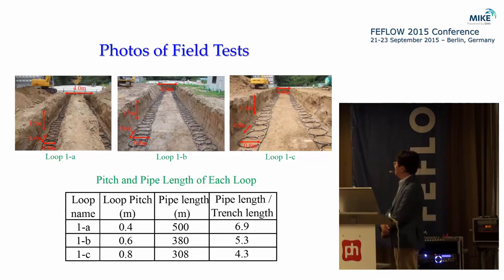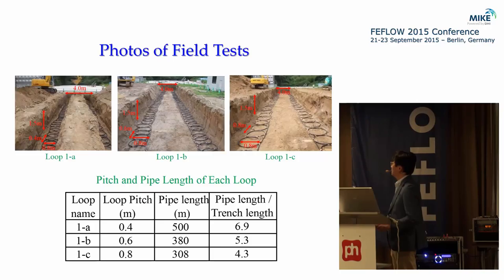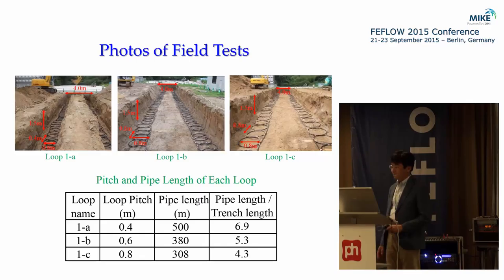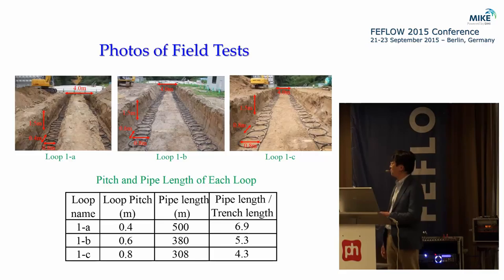At our university, we performed a field test by installing three types of horizontal trenches. Each trench has a length of 35 meters going and coming back, so the total pipe length is 70 meters, at a depth of 1.5 meters with a radius of 0.8 meters. We compared three loop types with different pitch spacings: 0.4 meters, 0.6 meters, and 0.8 meters — corresponding to 50%, 25%, and 0% overlap of each circle.